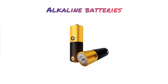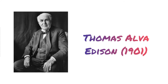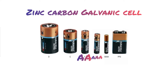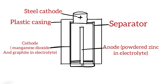Alkaline batteries are the most widely used batteries globally up to date. Thomas Alva Edison in 1901 was the first person to invent the alkaline storage battery; he used iron at the anode and nickel oxide at the cathode. Currently, the most used alkaline batteries are AA and AAA batteries, also called zinc-carbon galvanic cells.